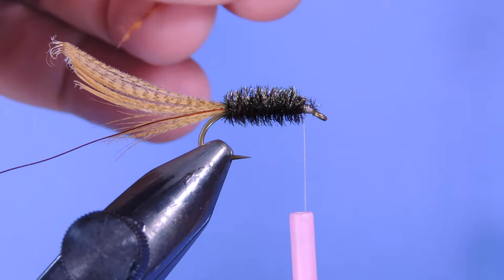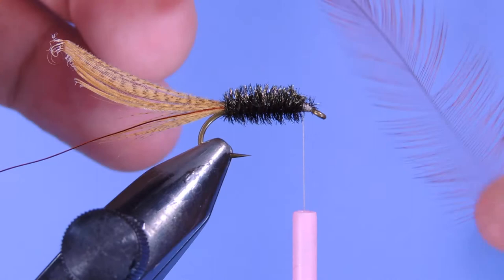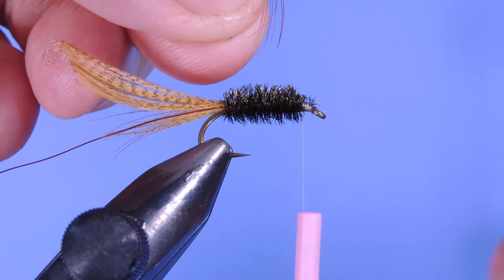You can either use a furnace hackle or a grizzly ginger type or grizzly dyed orange hackle for this. This is a saddle hackle. All I do is I just pull all the fibers forward so they're standing kind of at a 45 or 90 degree angle to the stem. Pull a few off the front.